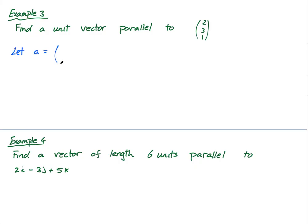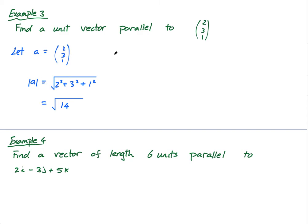Let A equal (2, 3, 1). If A is equal to this, what is the magnitude of A? The magnitude of A is the square root of 2 squared plus 3 squared plus 1 squared, which is the square root of 4 plus 9 plus 1 — the square root of 14. So that is a vector not of magnitude 1, it is of magnitude root 14. But if its magnitude is root 14, how can I find a vector that's parallel to that — going in the same direction — but has only a magnitude of 1? I simply divide the vector by root 14.